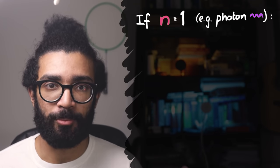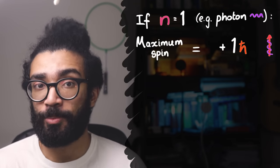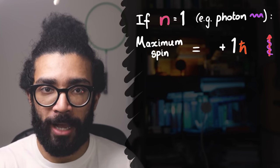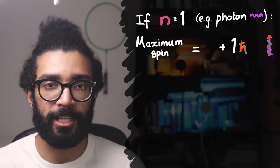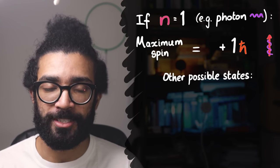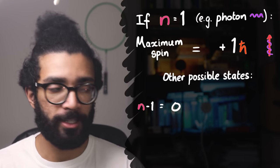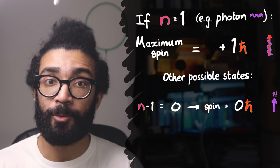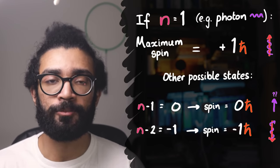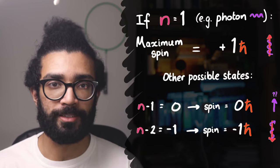So we start with this number, one. We multiply it by h-bar. So we find that h-bar is the maximum angular momentum we can find for our particular photon. Then for the next possible state, we subtract one from this number, giving us zero. And then we can find another state with the angular momentum negative one h-bar, or just minus h-bar.